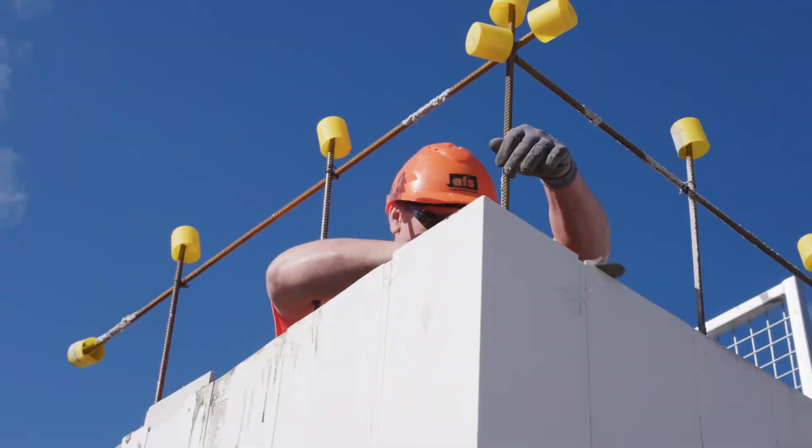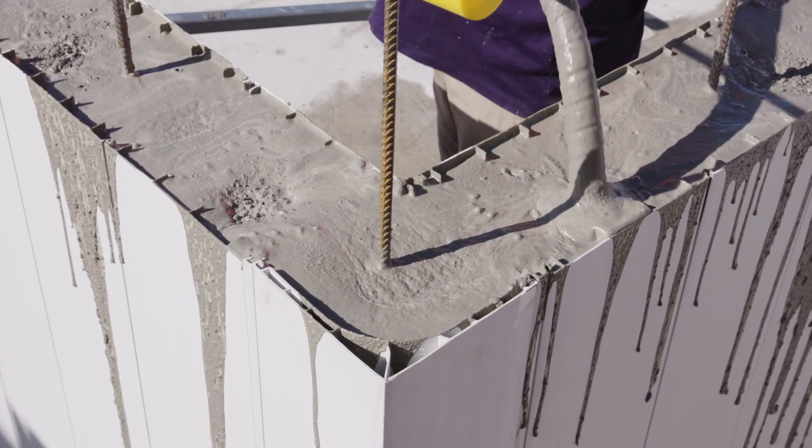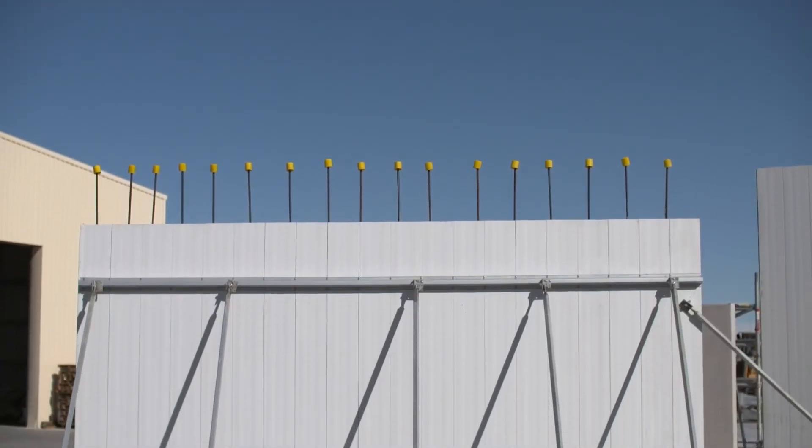During the pour, some concrete splatter may occur on the slab below and down the face of the AFS ReadyWall panels. All concrete splatter must be cleared off before it cures.